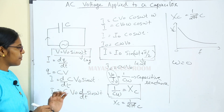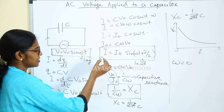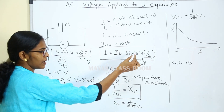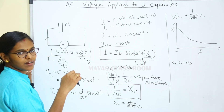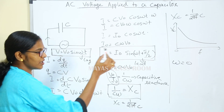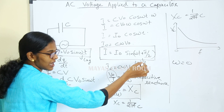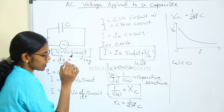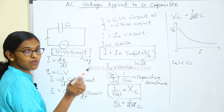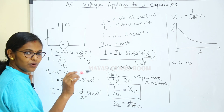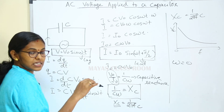To summarize: AC voltage applied to a capacitor gives V equal to V0 sin(ωt), and I equal to I0 sin(ωt + π/2), meaning current is leading. Xc is the capacitive reactance equal to 1/(Cω), which is the effective opposition offered by the capacitor to the flow of AC current.